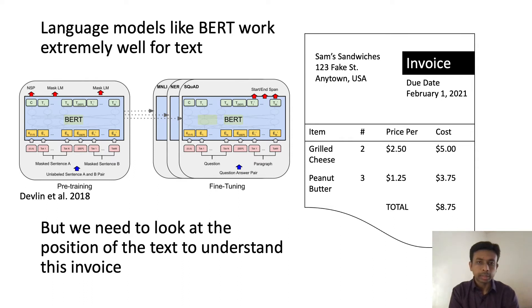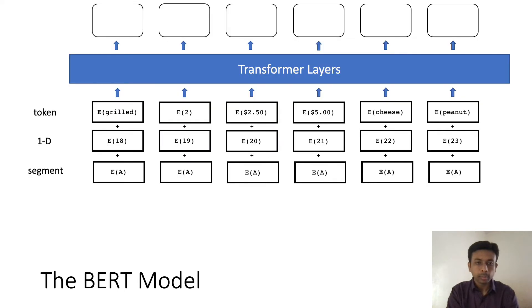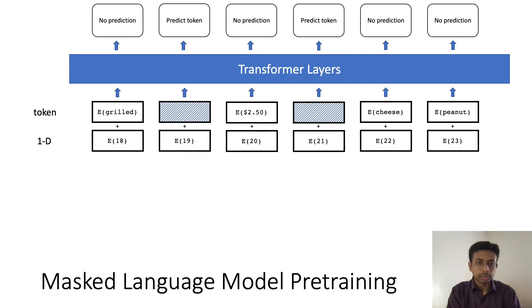This is the input to the BART model. There is a token embedding, a 1D position embedding which is the position of the word in the sequence, and also a segment embedding. The segment embedding is just to distinguish between two different sentences in an input. We're not using two sentences, so this is not important for our use.